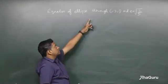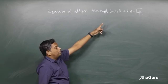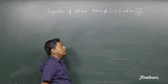We are asked to find the equation of the ellipse which passes through the point minus 3, 1 and has eccentricity root of 2 by 5.